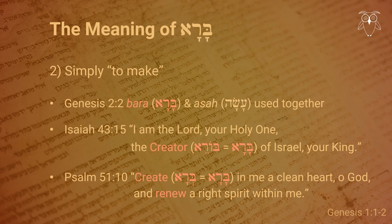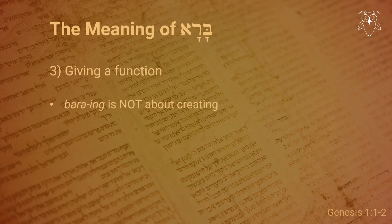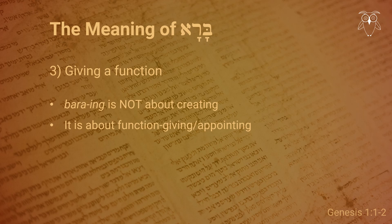And then there is the third opinion, which gained some popularity recently: that the primary meaning of the verb bara is not related to the question whether or not there was any pre-existing material, but that it has to do with function giving or appointing, rather than form giving. So God baraing isn't so much God going about and making or shaping things, either out of nothing or from pre-existing materials, but about putting things in their proper place and giving them a function.